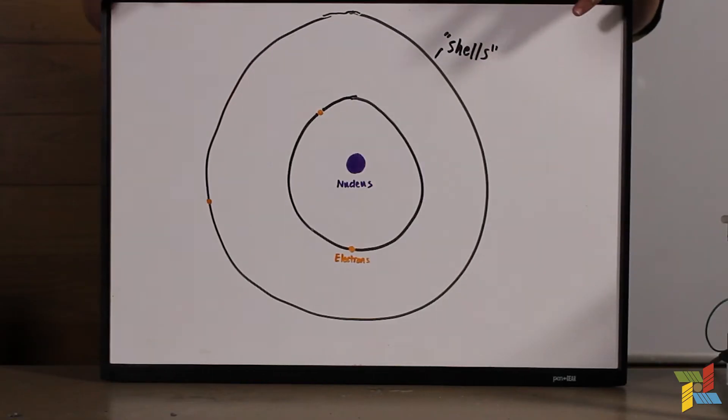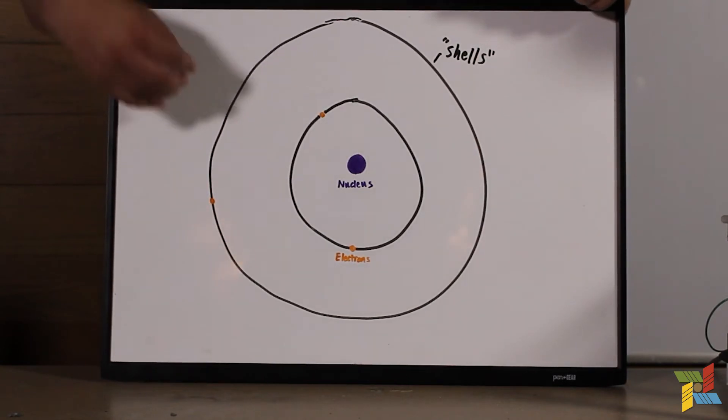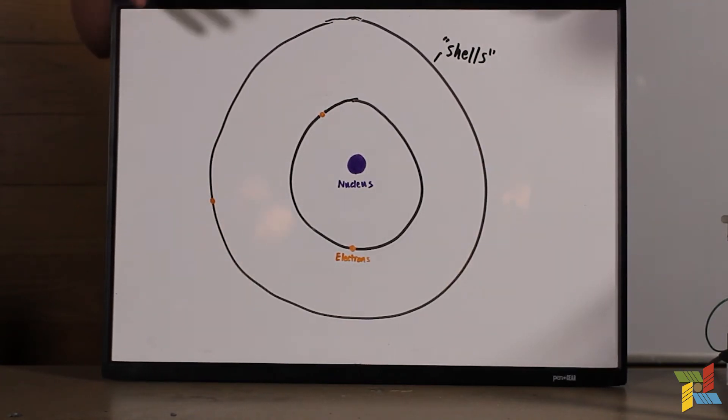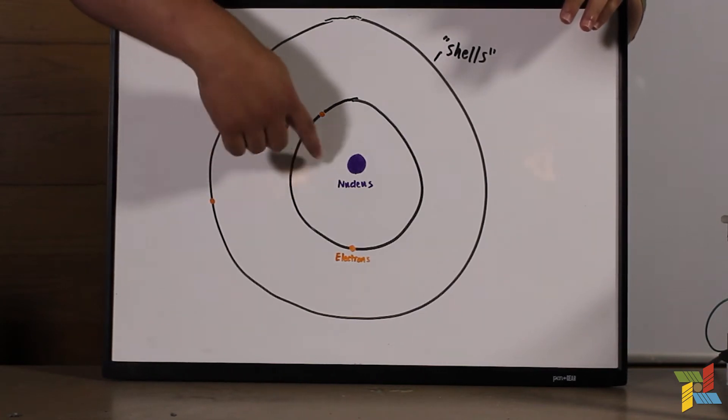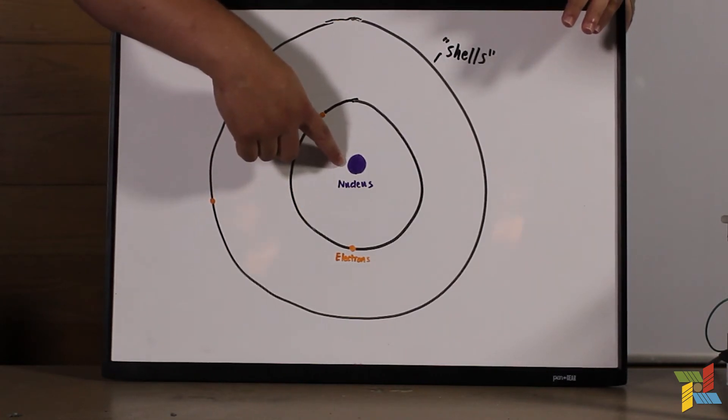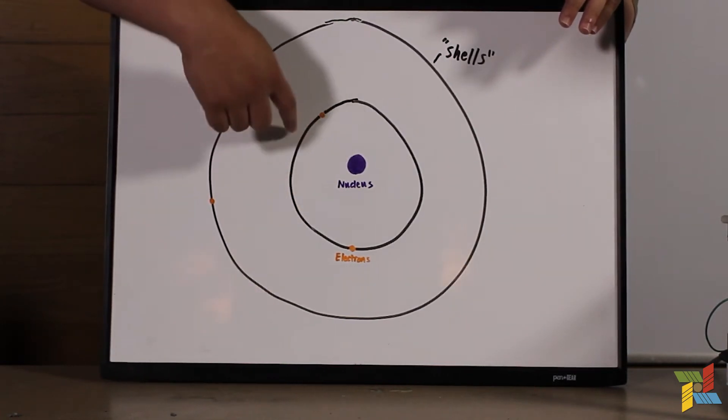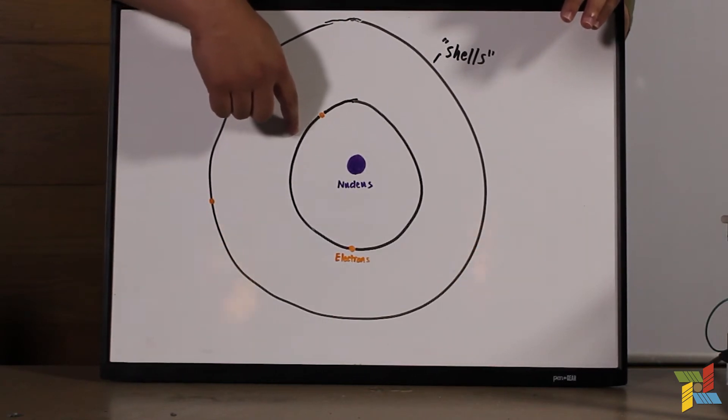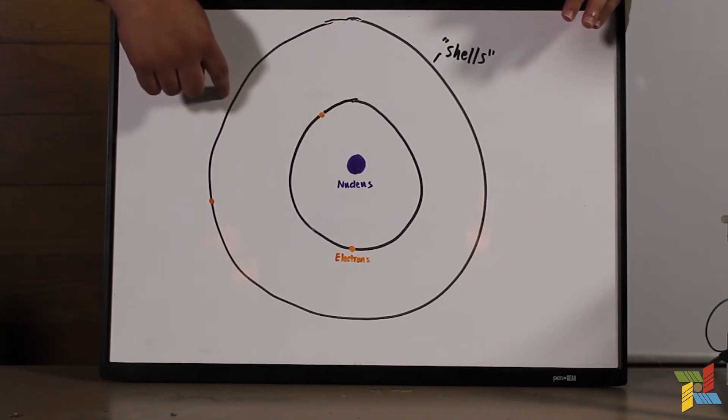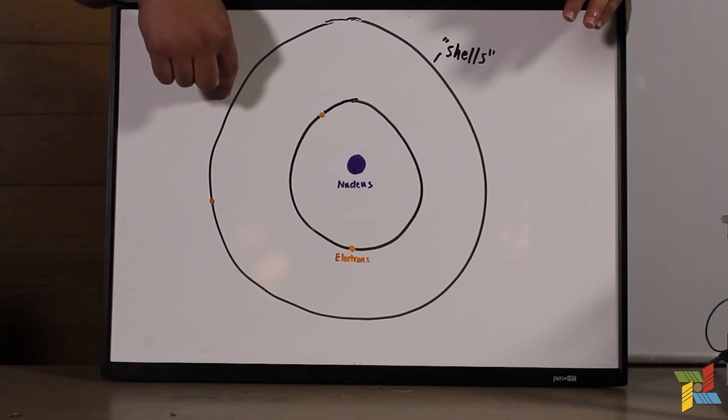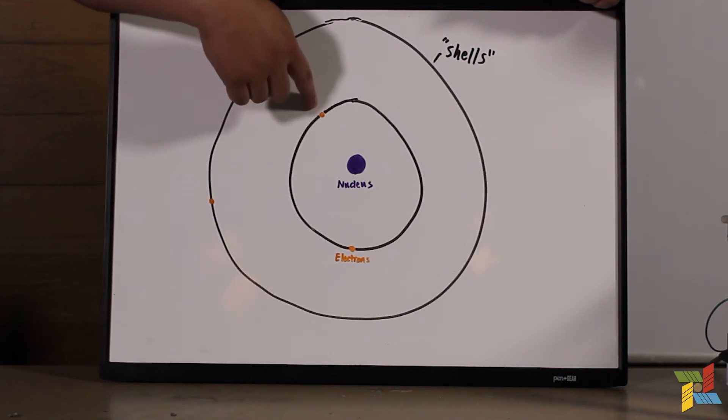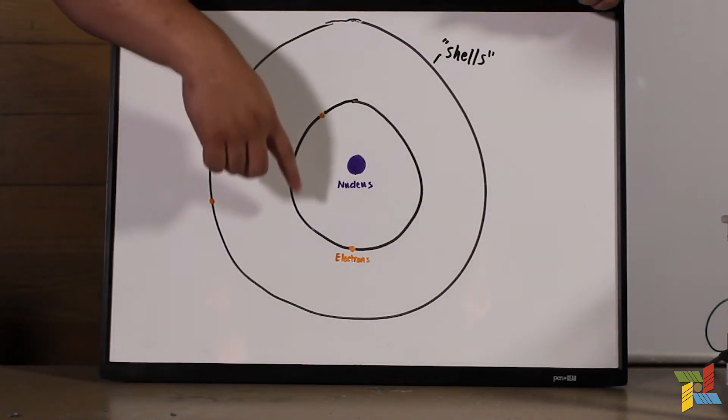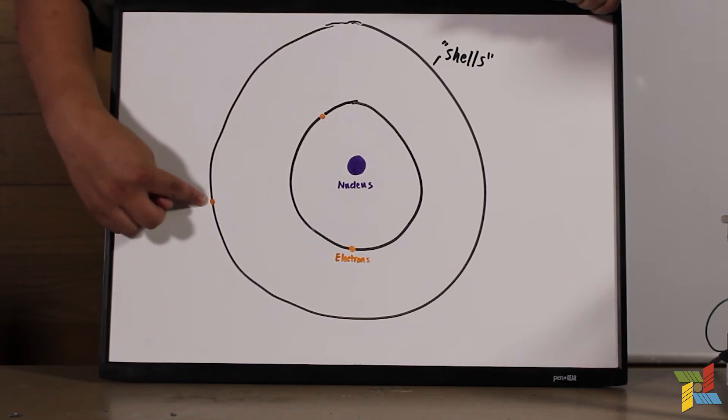In an argon atom, there are these different rings. And these rings represent different levels of energy. If it's closer to this center, which is called the nucleus, the ring closest to the center has the lowest amount of energy in it. The further away you get, the more energy they have. So these electrons that are floating around in this first ring have less energy than this electron out here.